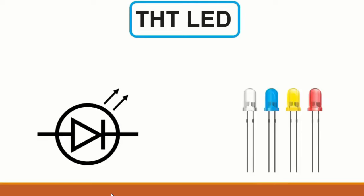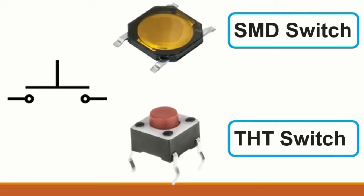Then we have LEDs - we've seen SMD LEDs earlier. Here are other LED types: these are THT LEDs because they have through-hole terminals. You can test them using the same principle as testing a normal diode. The symbol is the same as a diode but inside a circle with two arrows indicating light emission.